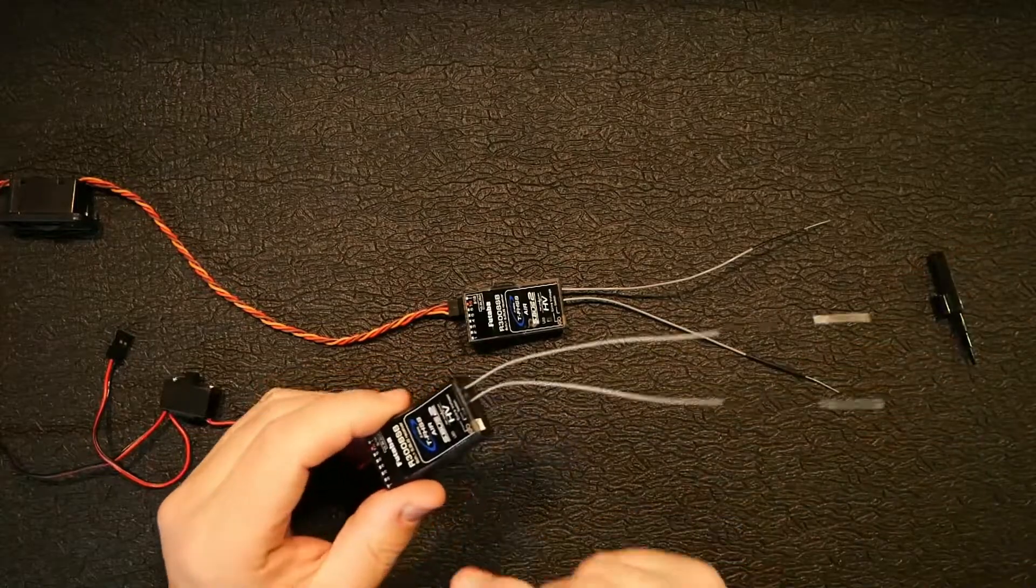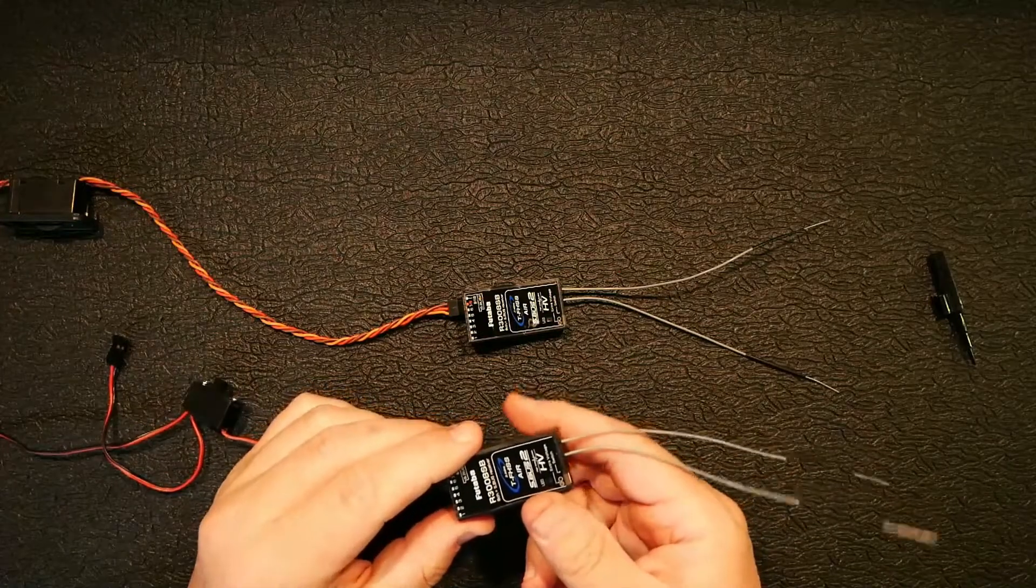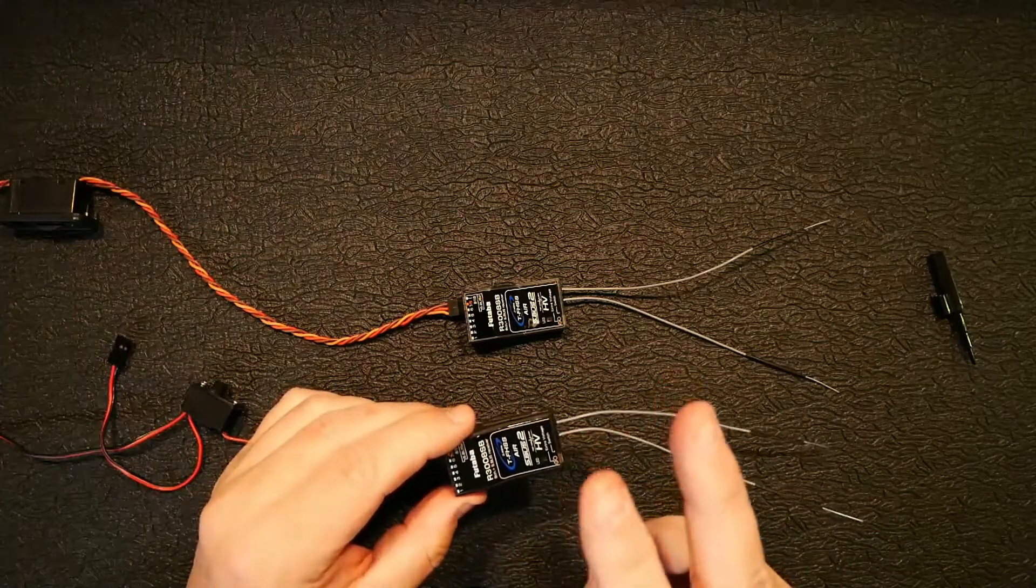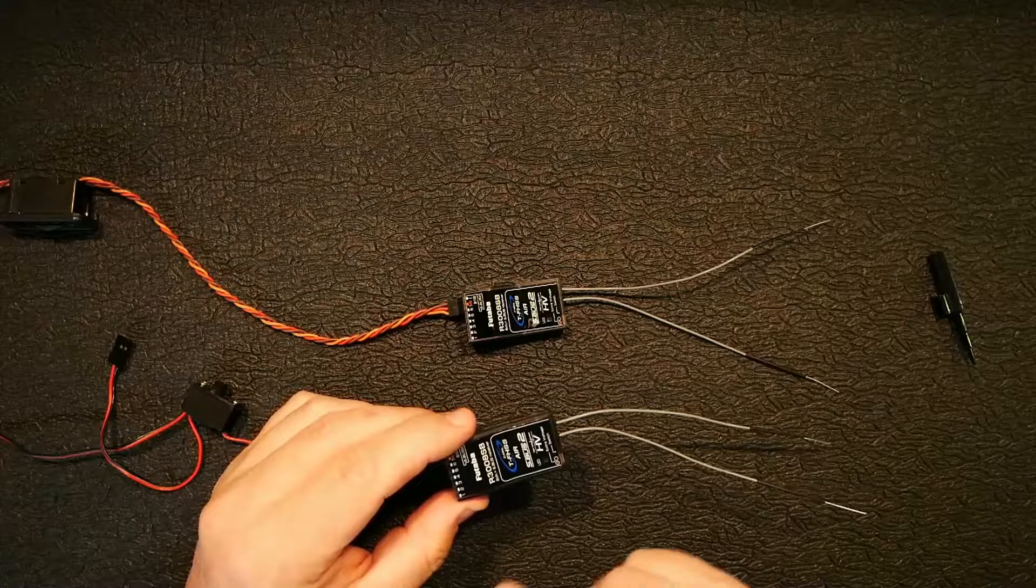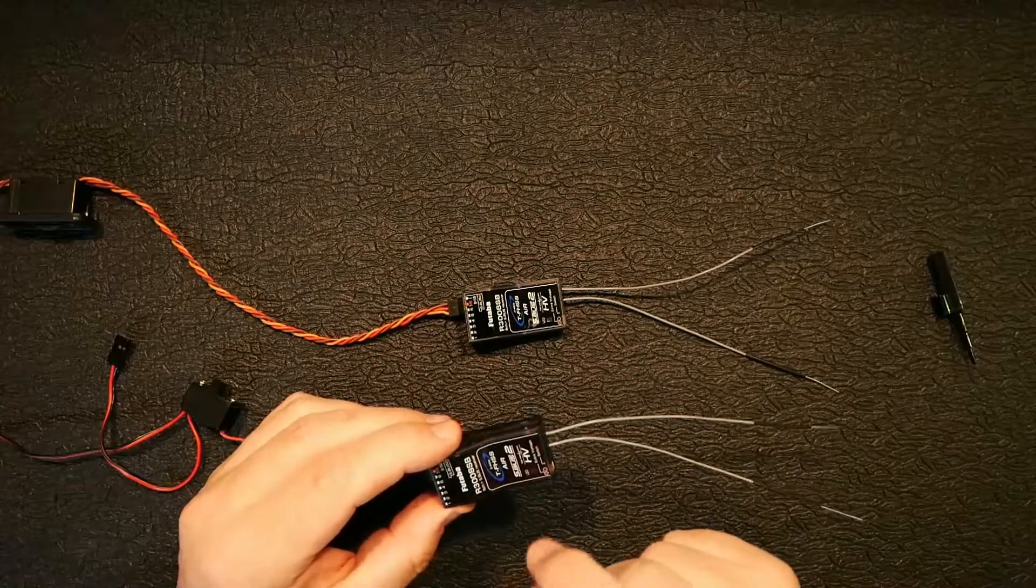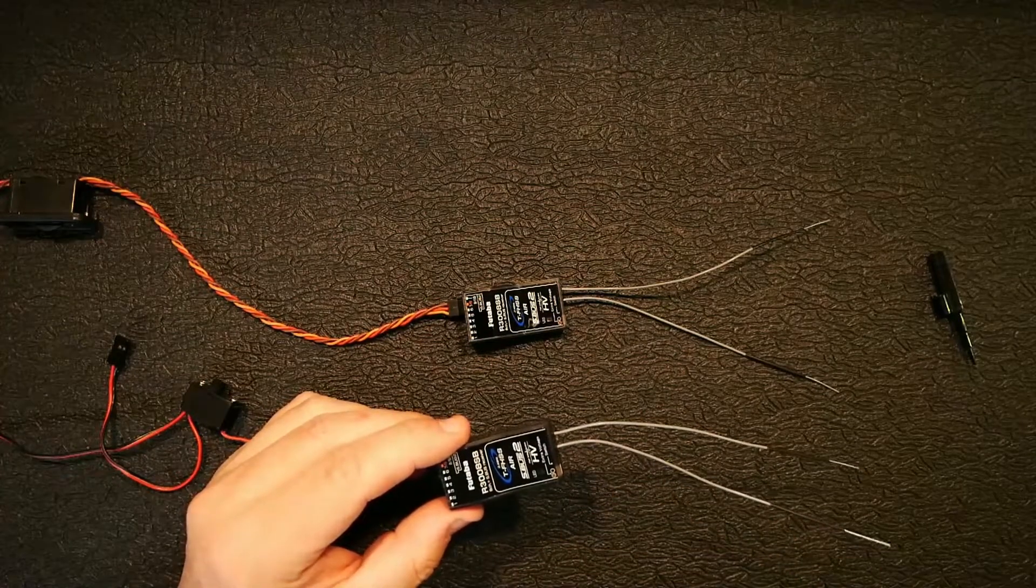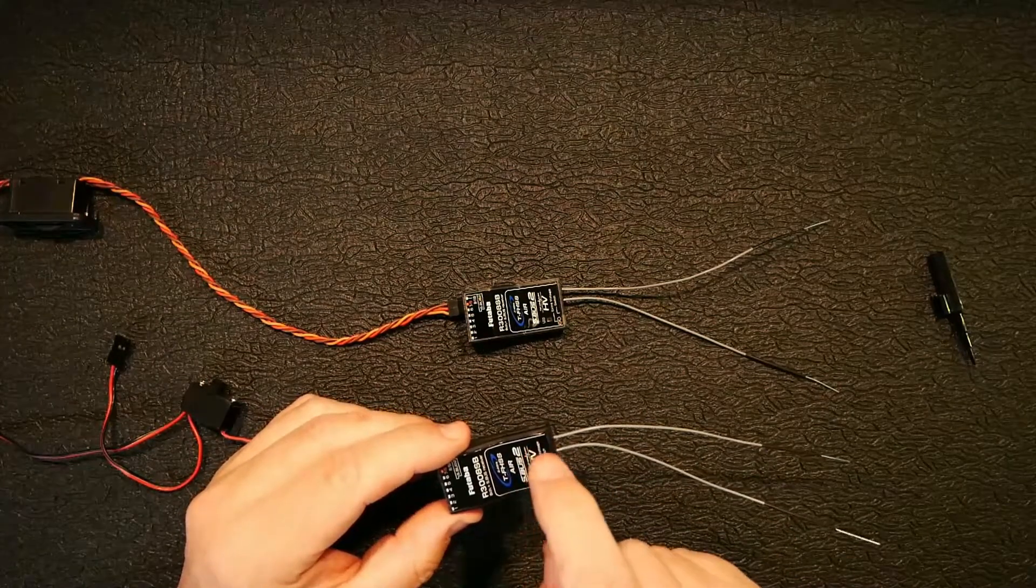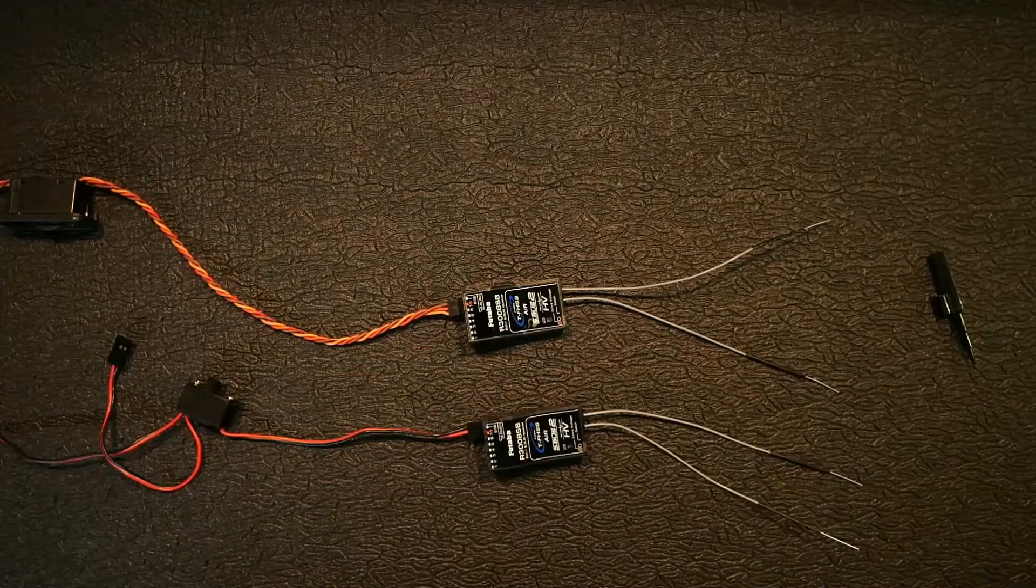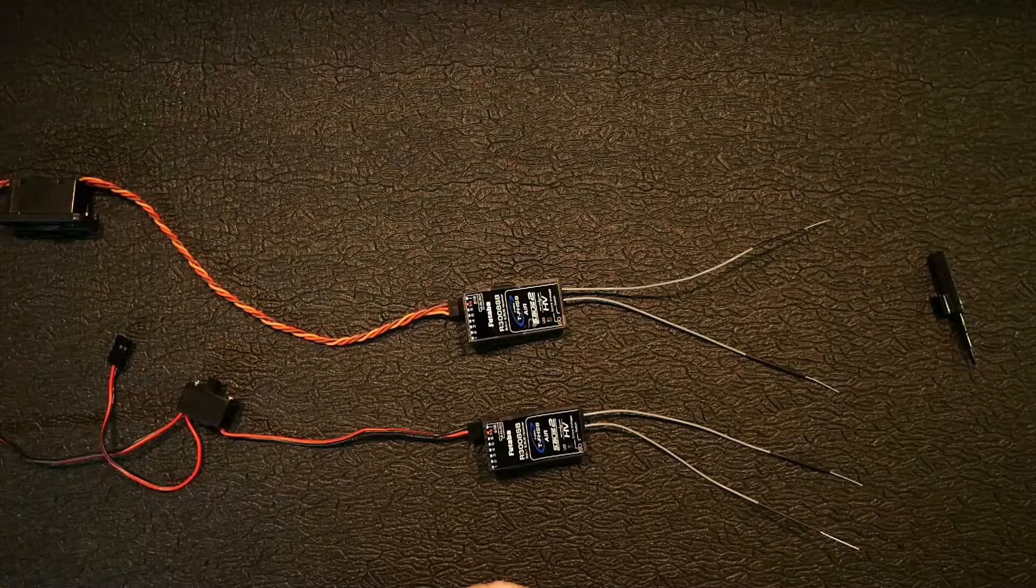And if you have a Futaba radio you've probably already noticed this and you may or may not know, but if you go into the Futaba menu you can do dual receiver links. It has two link buttons that you can hit, but I'm going to show you something. On the TFHSS it only has one link button, but you can link both of these to the same model. So just stay tuned for that video guys.